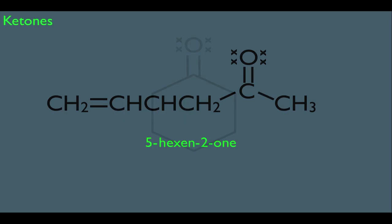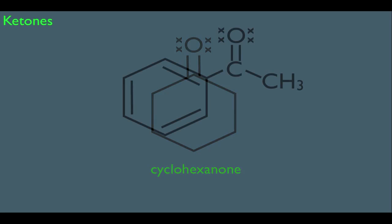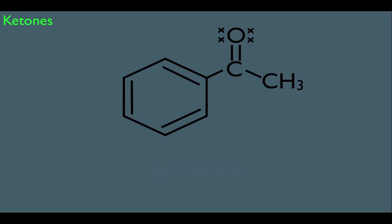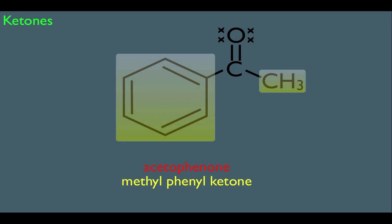What about ketones within rings? The name of this molecule would be cyclohexanone. If you put any substituents on it, the carbonyl group would have to be carbon number 1. For ketones attached to benzene rings, the common name of this molecule is acetophenone. You can also use the derived name system: this molecule would be called methyl phenyl ketone, because you have a phenyl on the left side and a methyl on the right side.